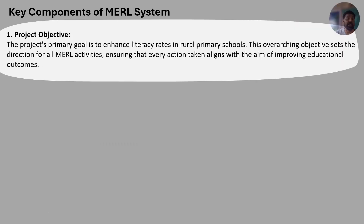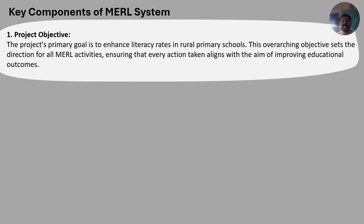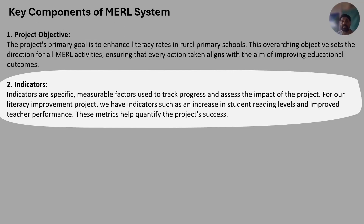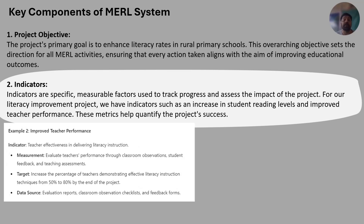Let's discuss each component. Project objective: for example, an education project to enhance literacy rates in rural primary schools sets the direction for all MNE activities, ensuring every action aligns with improving educational outcomes. Indicators are specific measurable factors used to track progress and assess impact — for the literacy project, indicators include increases in student reading levels and improved teacher performance.